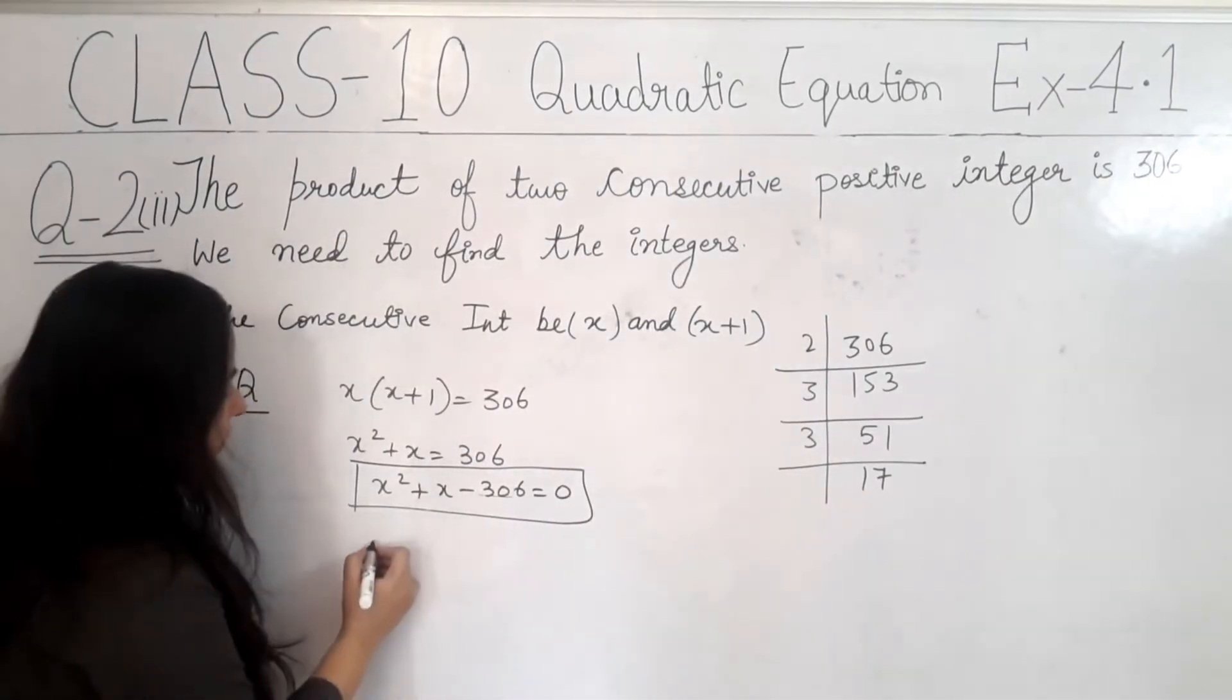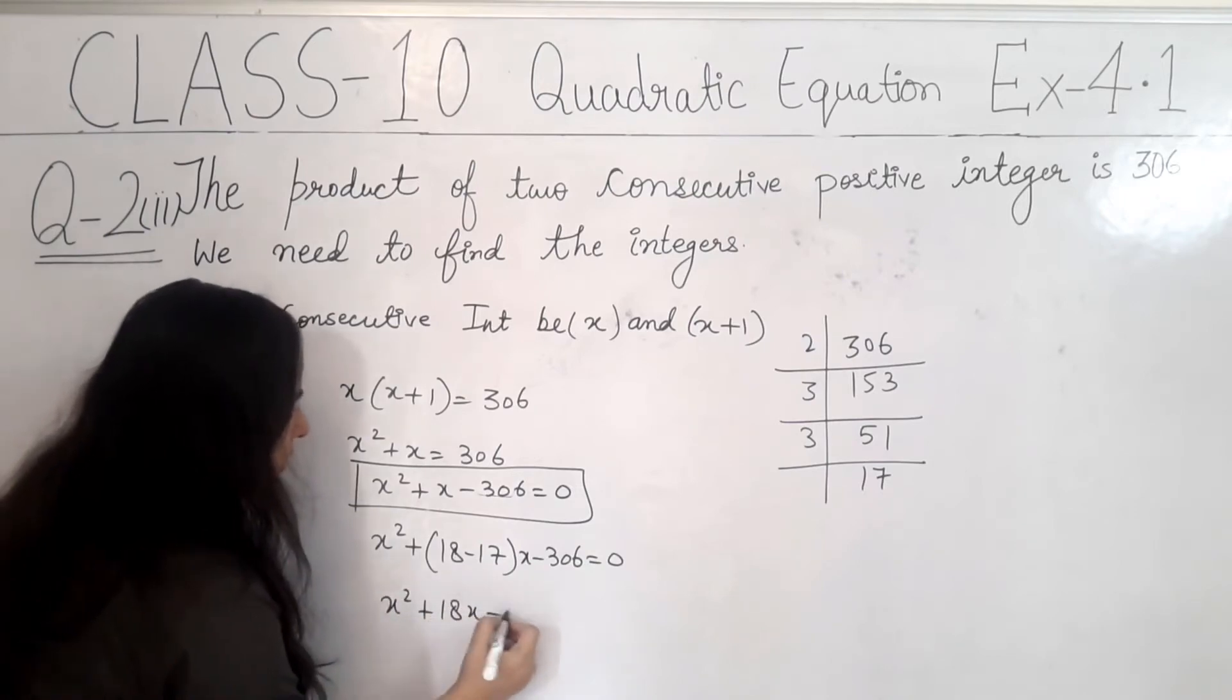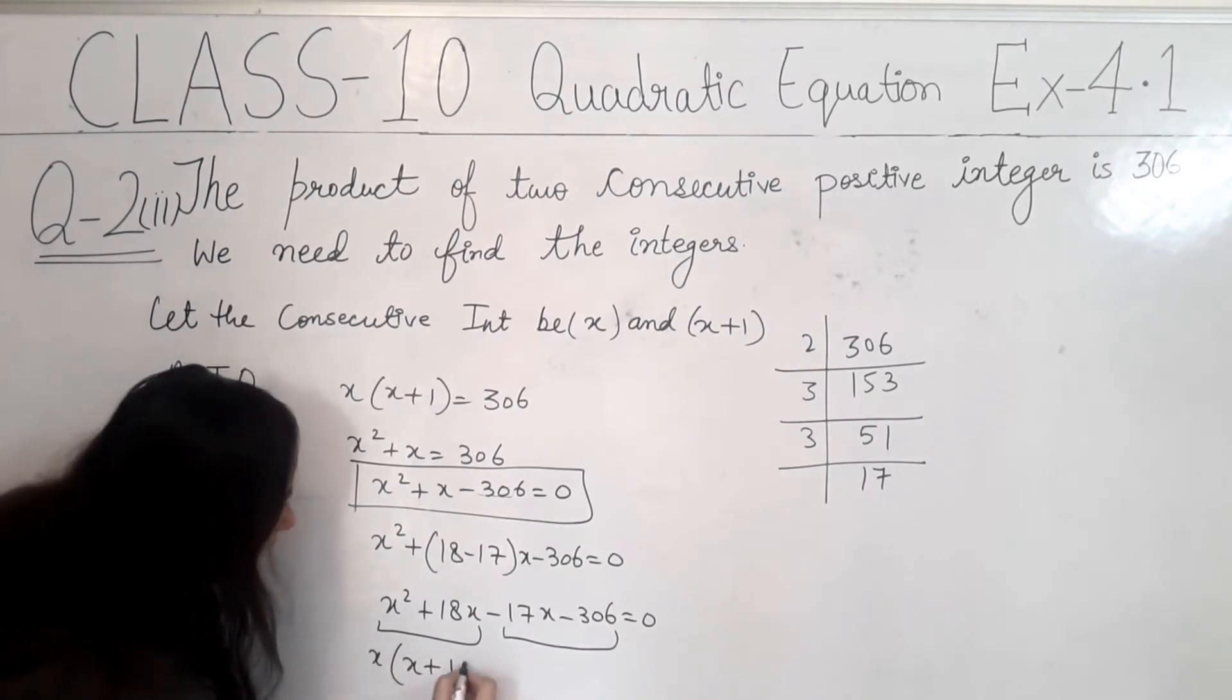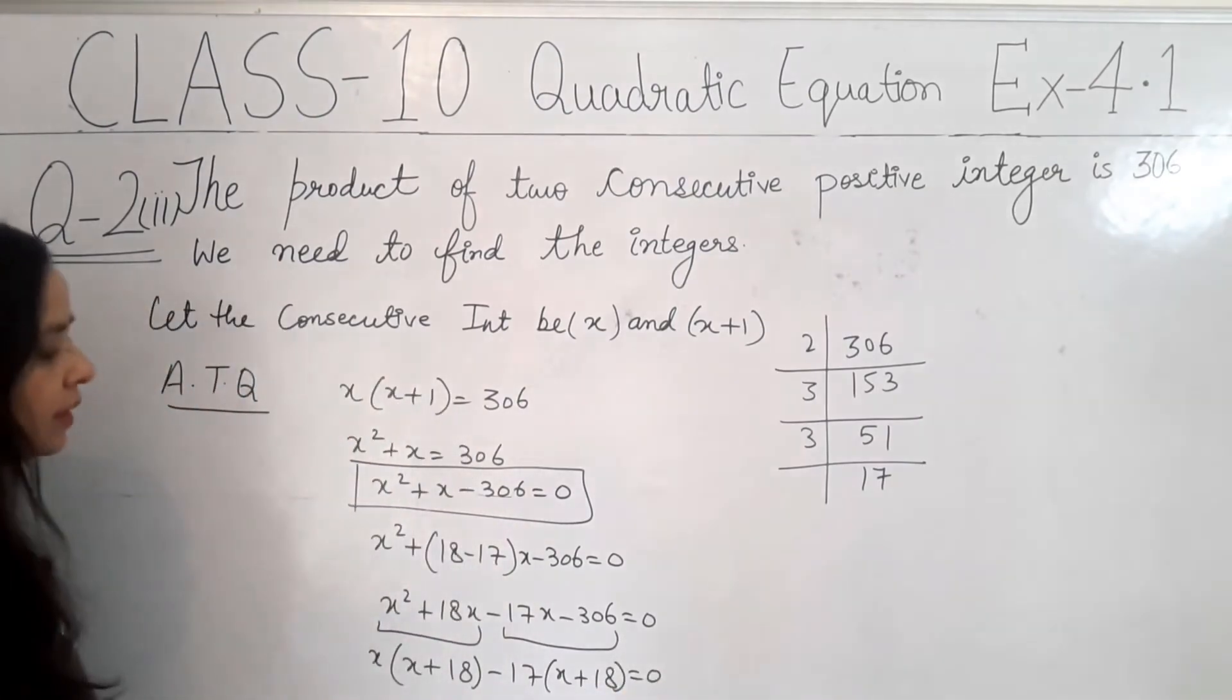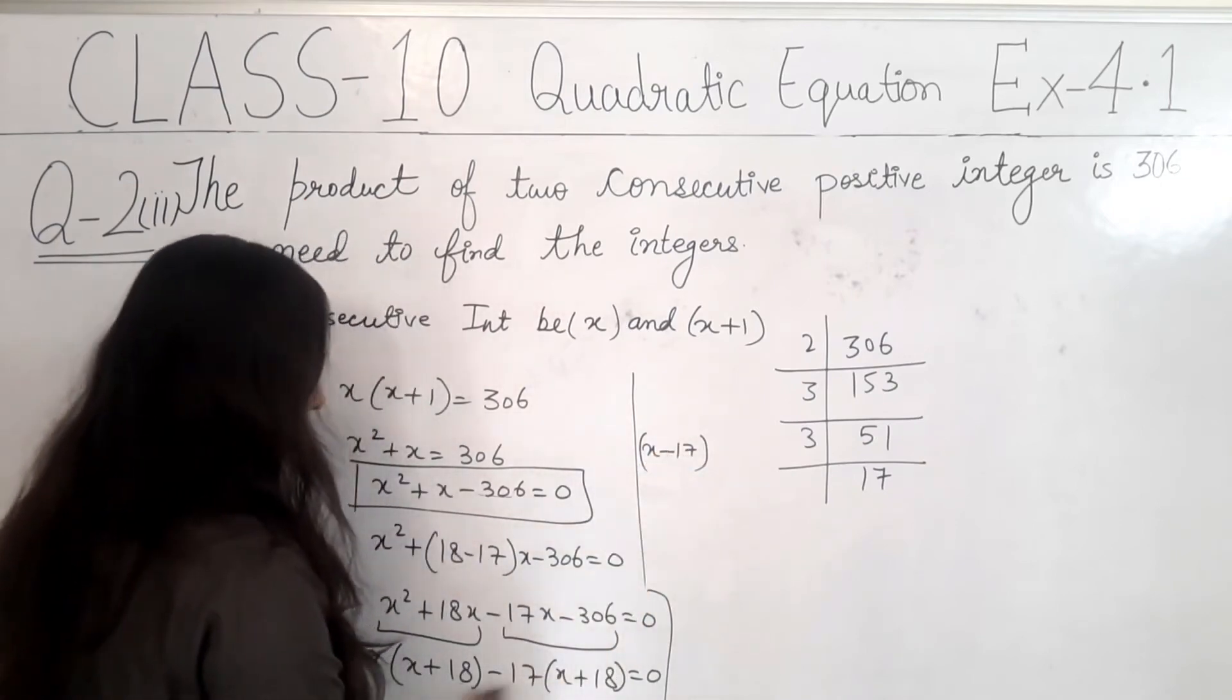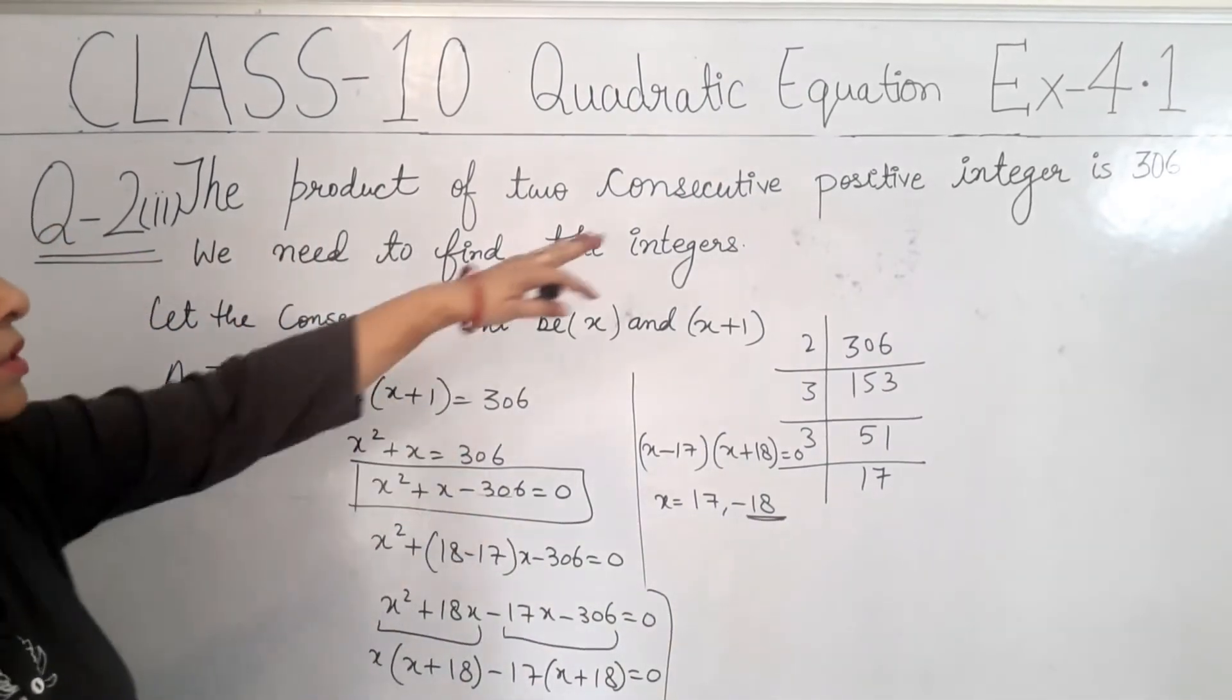So, 18 minus 17 is what is 1. So, what do we write? x square plus 18x minus 17x minus 306 is equal to 0. It is a very simple question. It will be very easy. Now, we will take common from these two and this is regrouping. So, x is common: x(x plus 18) and minus 17 is common: minus 17(x plus 18).